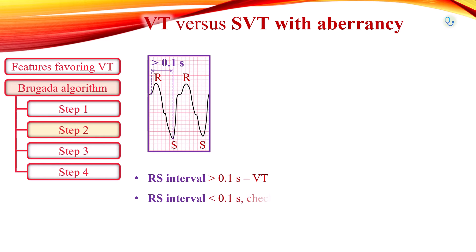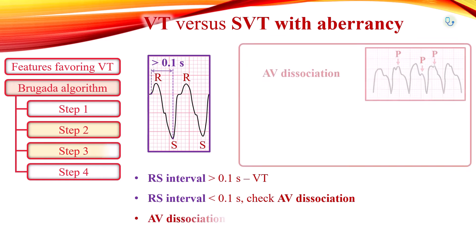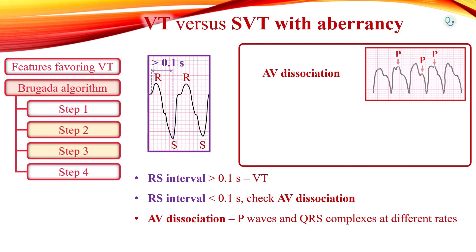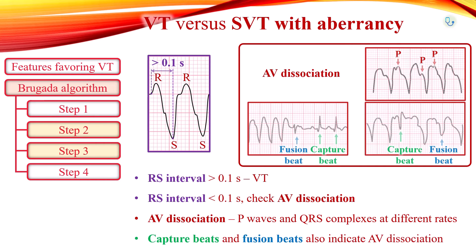If the RS interval is less than 100 ms, check for atrioventricular dissociation. If P waves can be observed at a different rate to the QRS complex, AV dissociation is present and VT is diagnosed. Secondary signs of AV dissociation include capture beats and fusion beats.